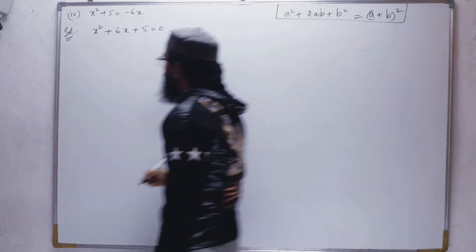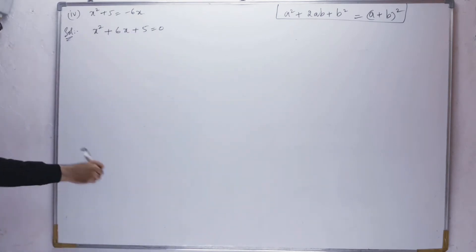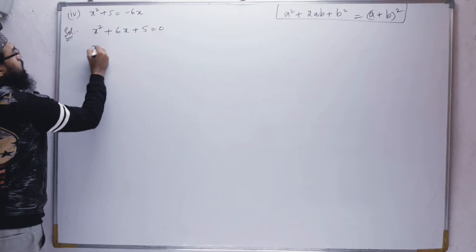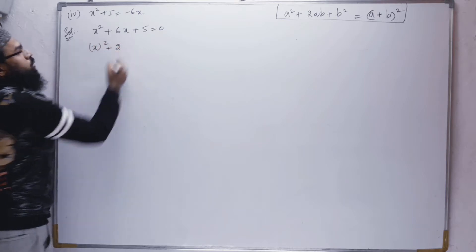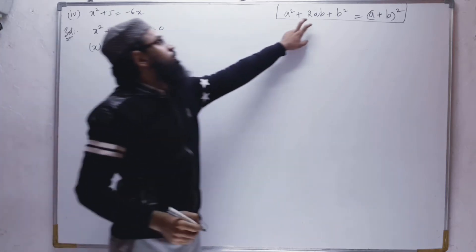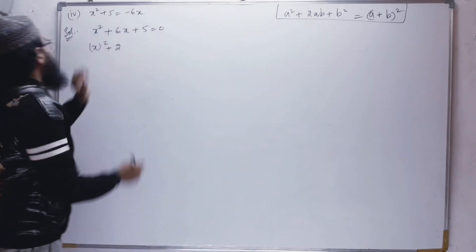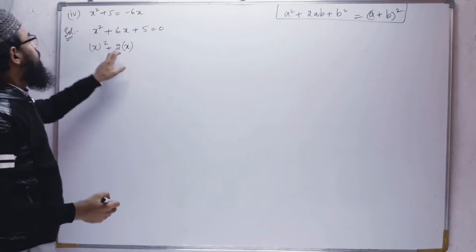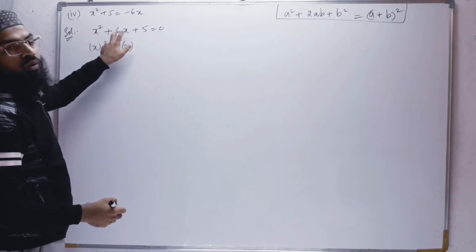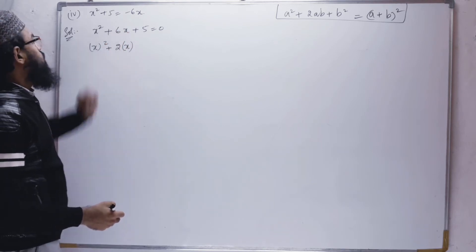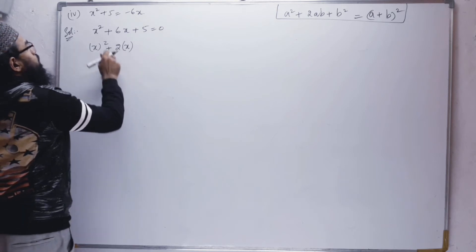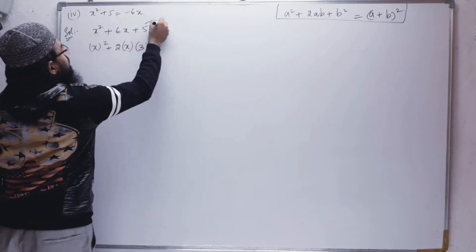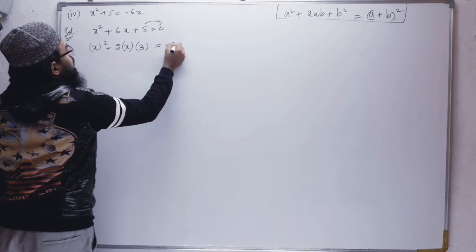Next, a² is x². So we have x² + 2 times a times b. From the formula, we take this 2. Since a is x, what is b? We need to divide 6x by 2x. x cancels, and 6 divided by 2 is 3. So b = 3. This 5 goes to the other side, so it becomes minus 5.